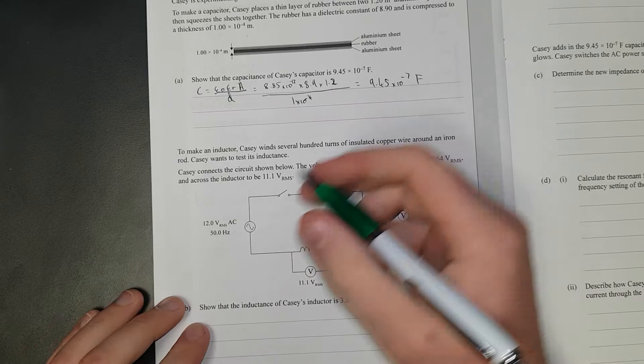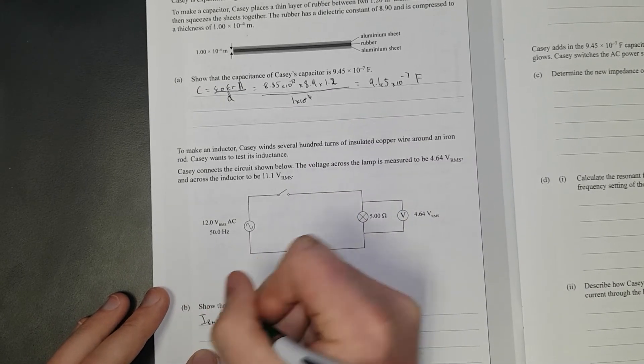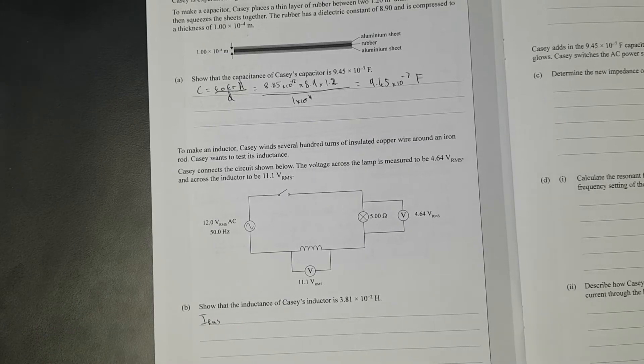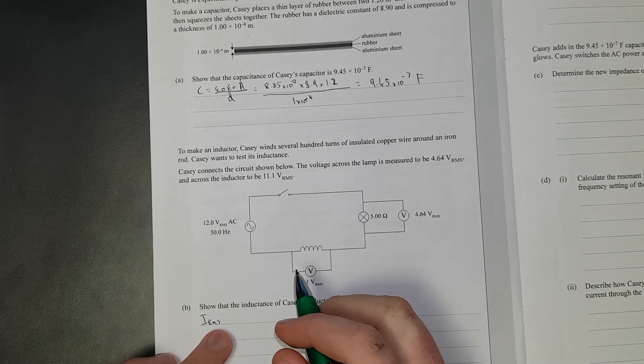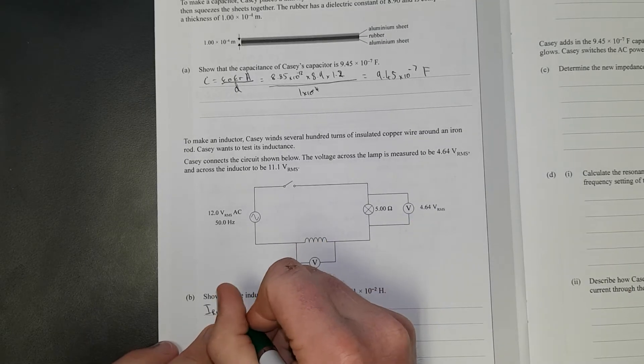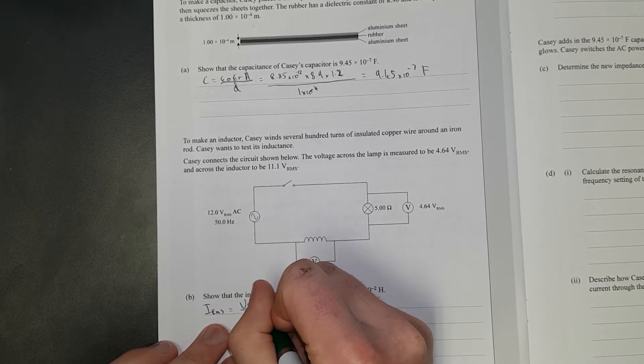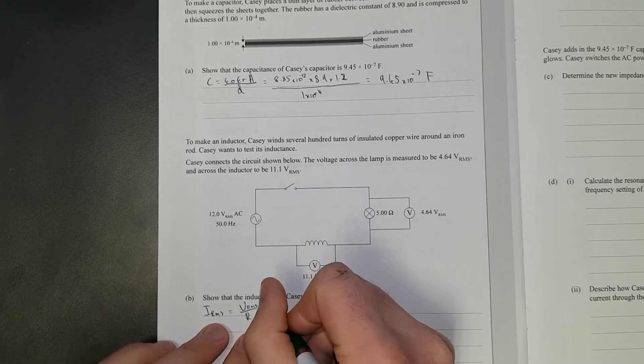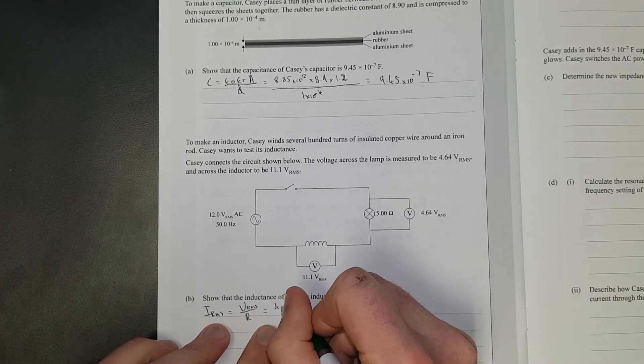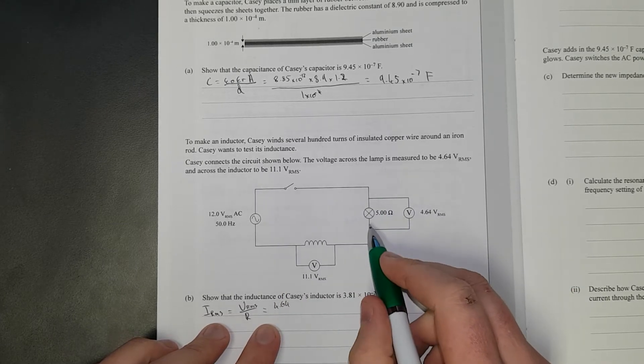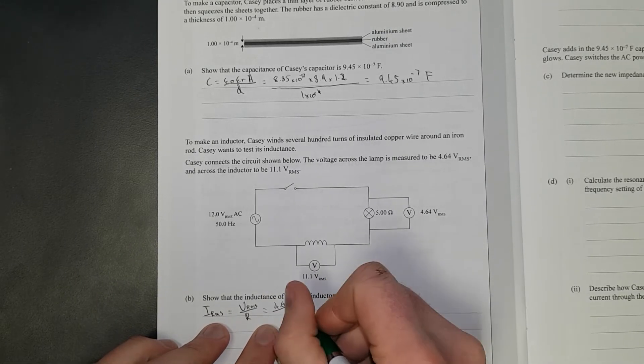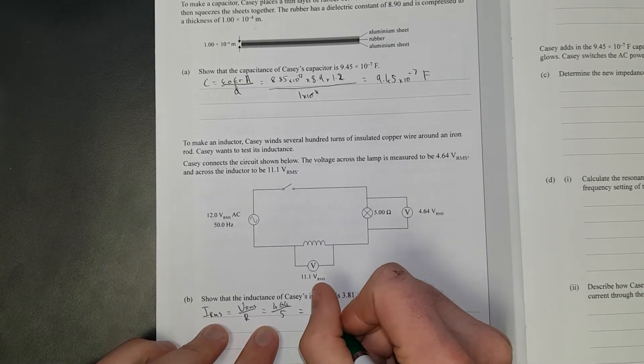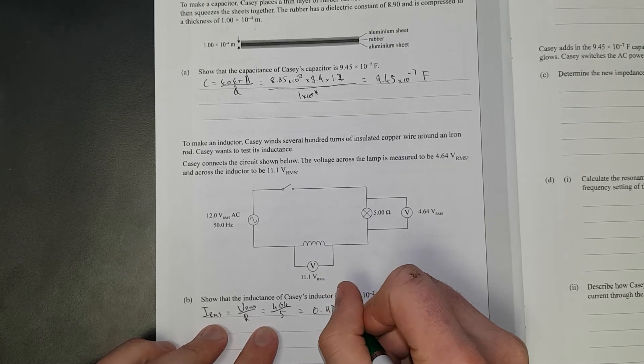This is kind of a question where you don't really know where to start, so what you should do is just find everything you can. We should really find the current through the circuit. We'll do that from here. Here we've got the voltage, you've got the resistance. So the current RMS, everything's in RMS root mean squared, is equal to the voltage RMS divided by the resistance. That's 4.64 divided by 5, and that is going to give me 0.93 amps.